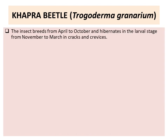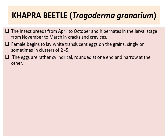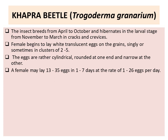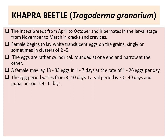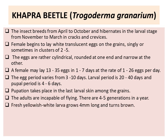The khapra beetle breeds from April to October and hibernates in the larval stage from November to March in cracks and crevices. The female begins to lay white translucent eggs on the grains singly, or sometimes in clusters of 2 to 5. The eggs are rather cylindrical, rounded at one end and narrow at the other. The female lays 13 to 35 eggs in 1 to 7 days at a rate of 1 to 26 eggs per day. The egg period varies from 3 to 10 days, the larval period is 20 to 40 days, and the pupal period is 4 to 6 days. Pupation takes place in the last larval skin among the grains. The adults are incapable of flying and there are 4 to 5 generations in a year.